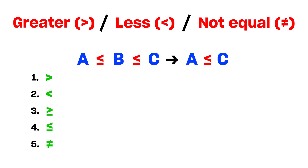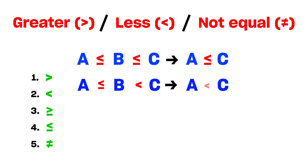Suppose A less than or equal to B, and B less than C. Here, from A to C only the less than symbol is following. So your answer is only A less than C.